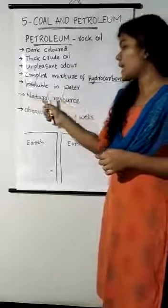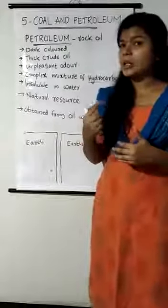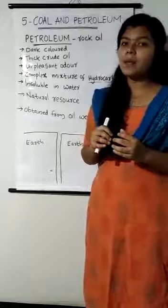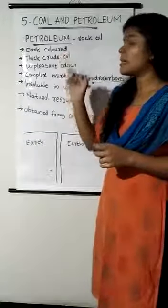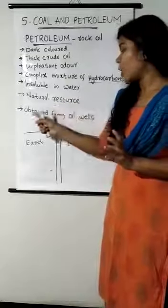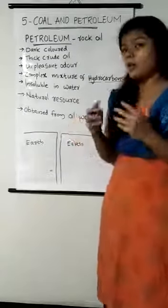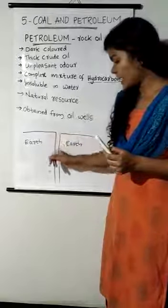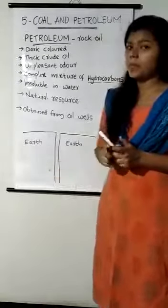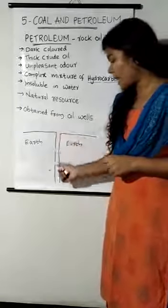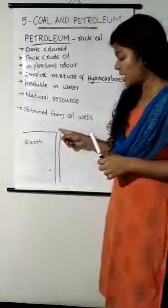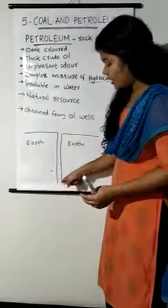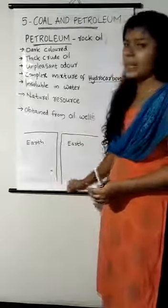Petroleum is a natural resource. Natural resources means the materials or substances which are occurring in nature. Petroleum is obtained from oil wells — oil wells are holes which are dug into the earth, and from there we get petroleum.